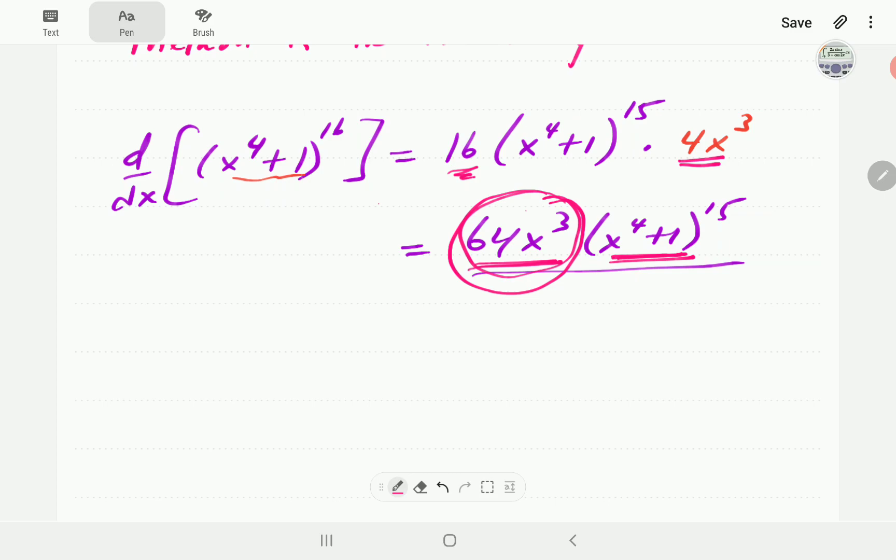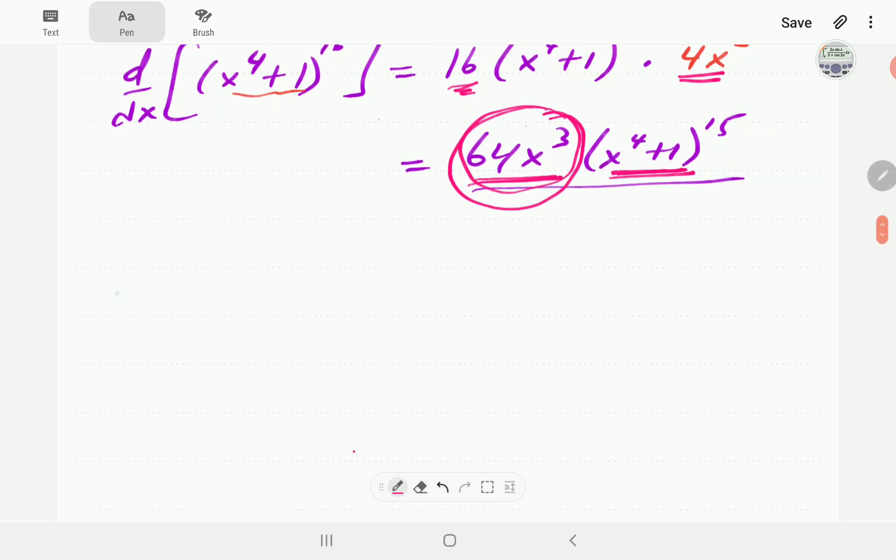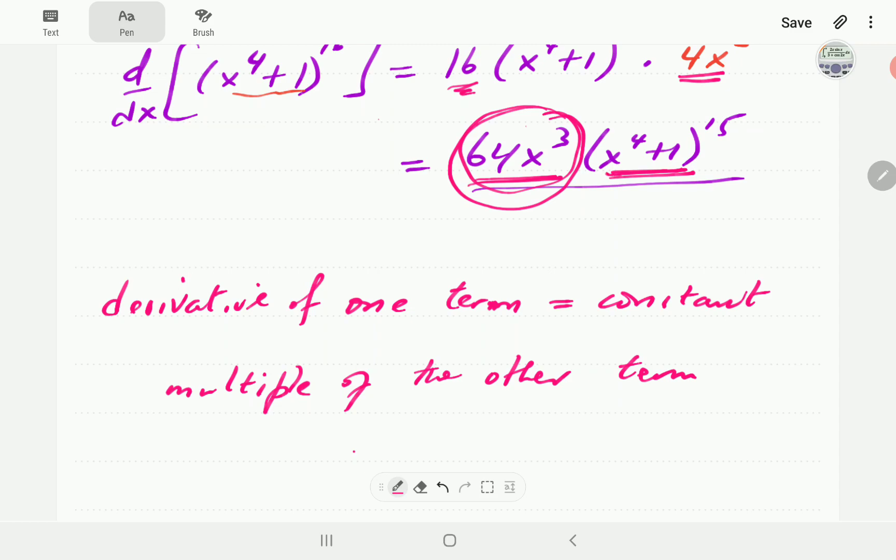So, whenever you get that type of situation, then the integral of that nature is going to be a natural candidate for the method of u-substitution. In this case, the derivative of this is 4x cubed. This is a constant multiple of 4x cubed.